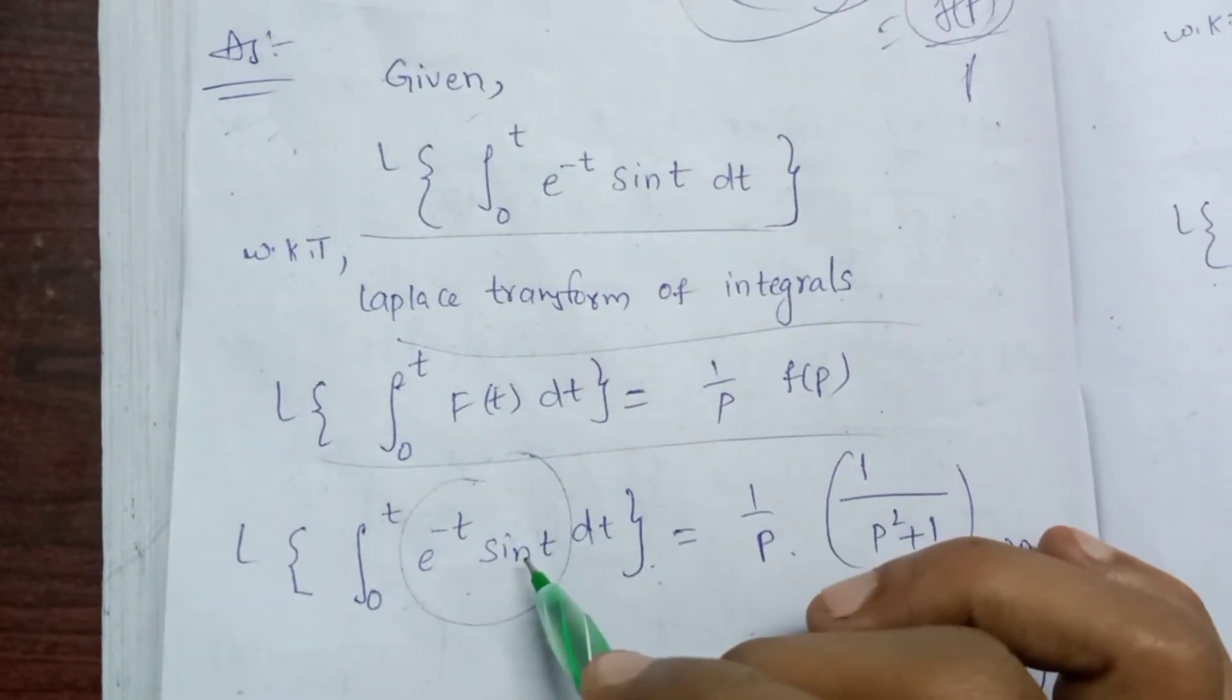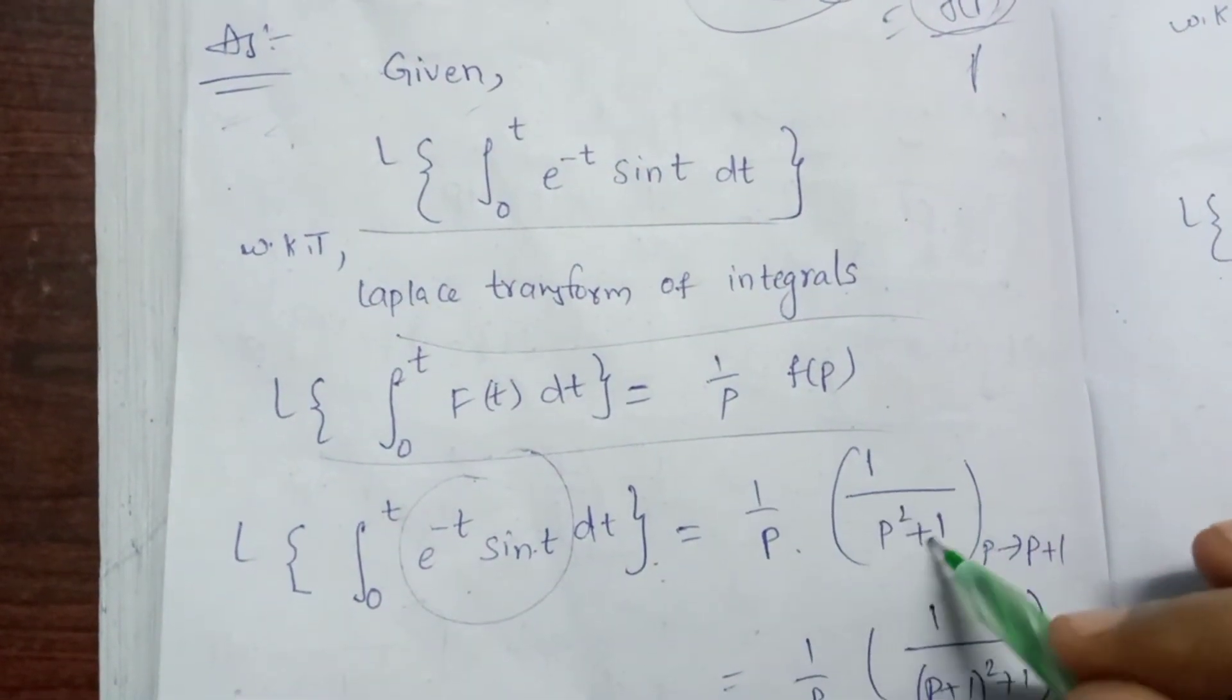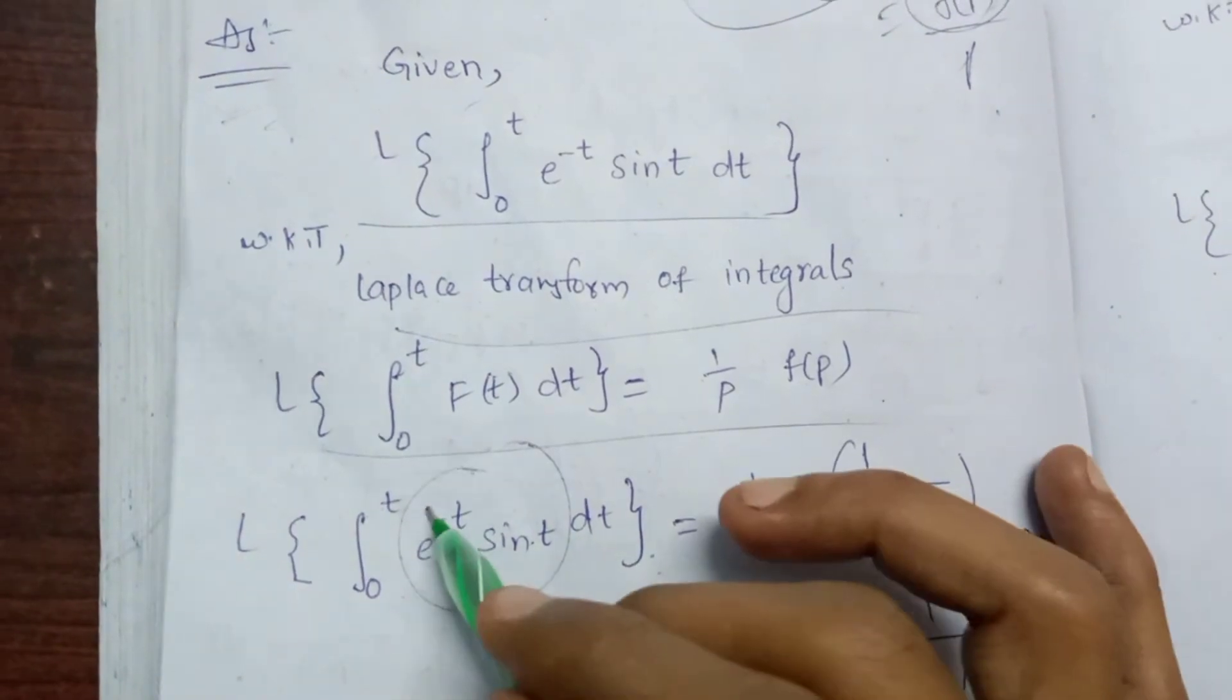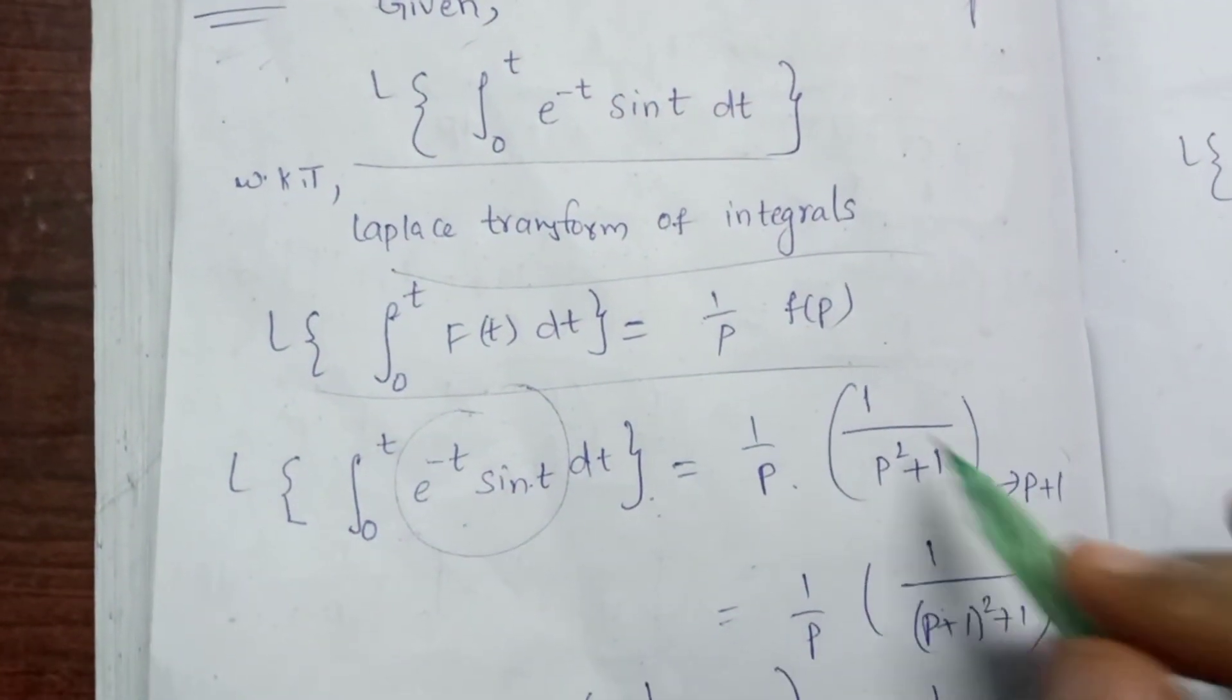The Laplace of sin t is 1 divided by p squared plus 1. With first shifting, p becomes p plus 1, giving 1 over p plus 1 whole square plus 1.